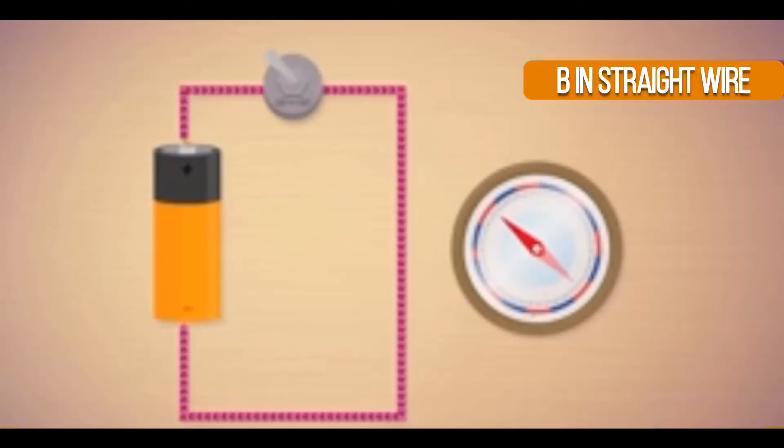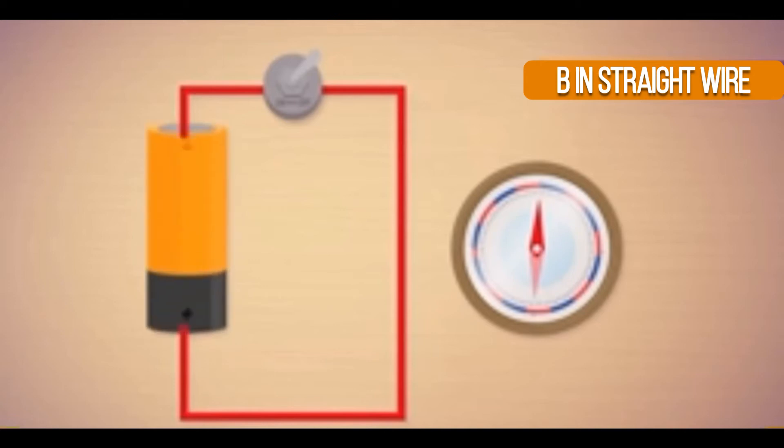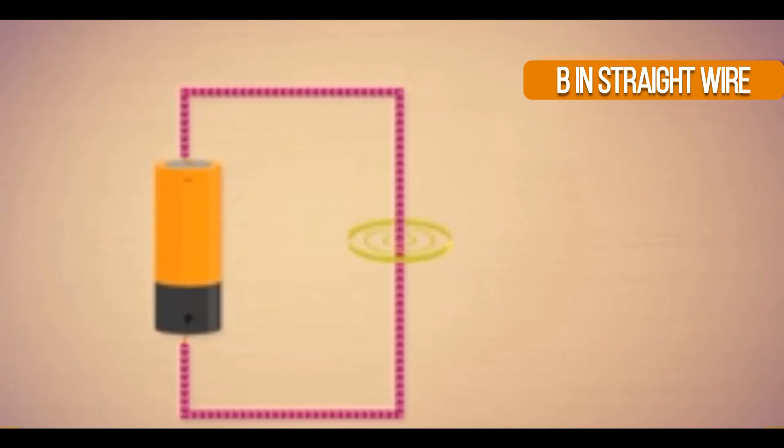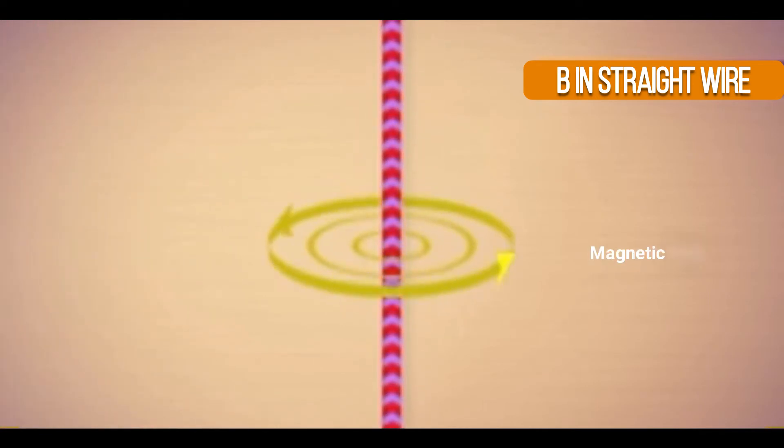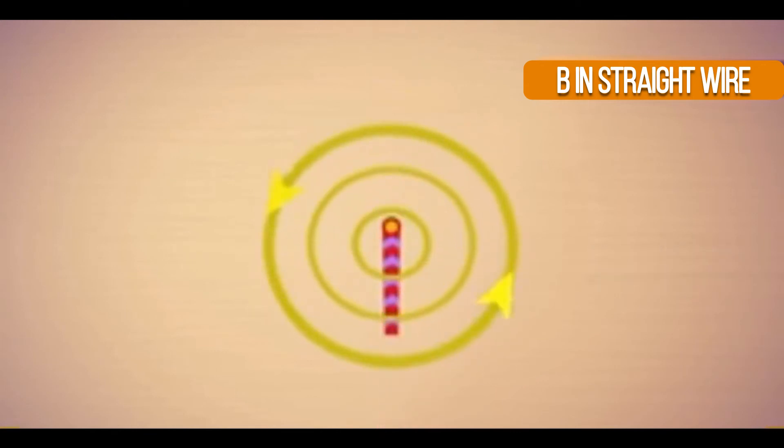A simple circuit shows that when the switch is on, the compass needle deflects and vice versa. It shows that when current flows through the circuit, a magnetic field is produced. The magnetic field is produced inside the current carrying conductor because of moving charges inside the conductor.